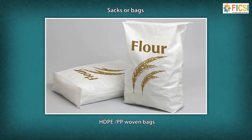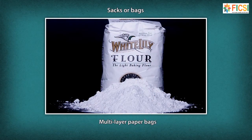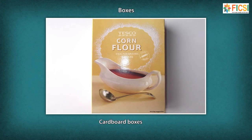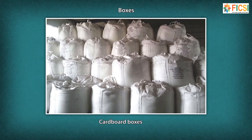Sacks or Bags: These include HDPE or PP woven bags, jute or hessian sacks, and multilayered paper bags. These bags are specially designed for food grain packaging, with liners for better sealing to restrict moisture, impurities, and dirt. Cardboard boxes are generally used for retail packaging. Once cereal or flour is sealed into a sack or bag, risks of contamination by insects, dust and microorganisms are reduced but not eliminated. Incorrect storage conditions such as exposure to sunlight, heat and water can result in spoilage.